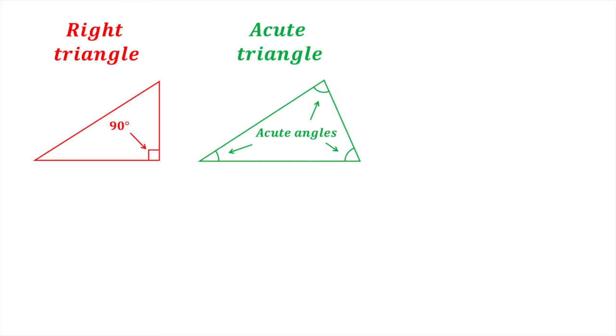Another type of triangle is an acute triangle. This type of triangle has three acute angles. An acute angle is an angle of less than 90 degrees.